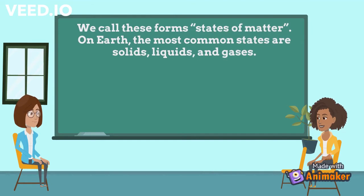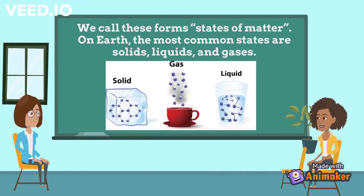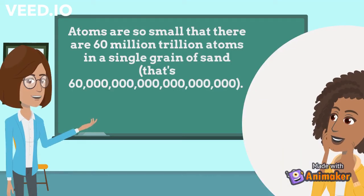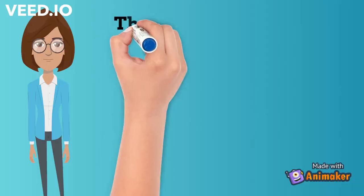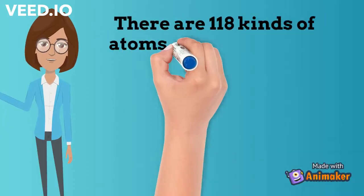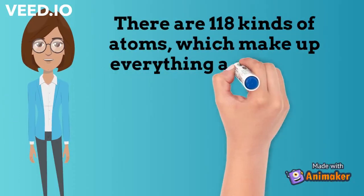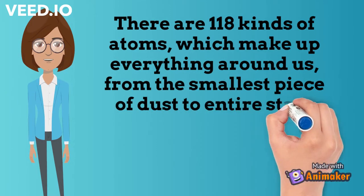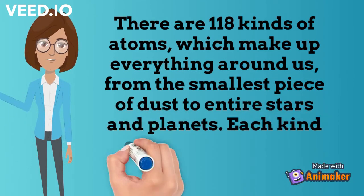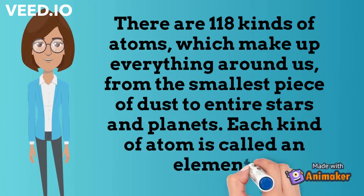Matter takes on different forms depending on how the atoms are arranged. We call these forms states of matter. On Earth, the most common states are solids, liquids, and gases. Atoms are so small that there are 60 million trillion atoms in a single grain of sand. There are 118 kinds of atoms, which make up everything around us, from the smallest piece of dust to entire stars and planets. Each kind of atom is called an element.